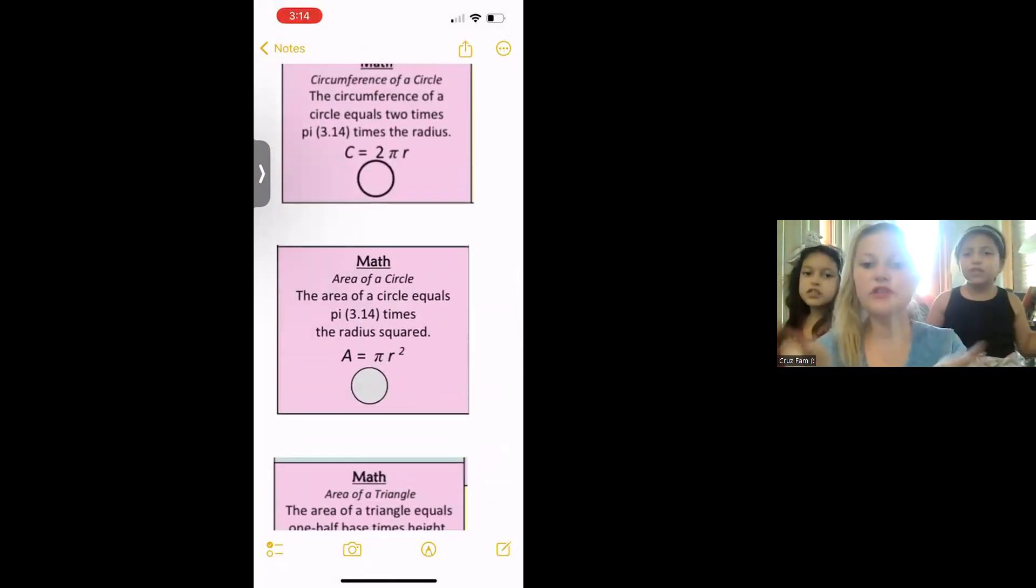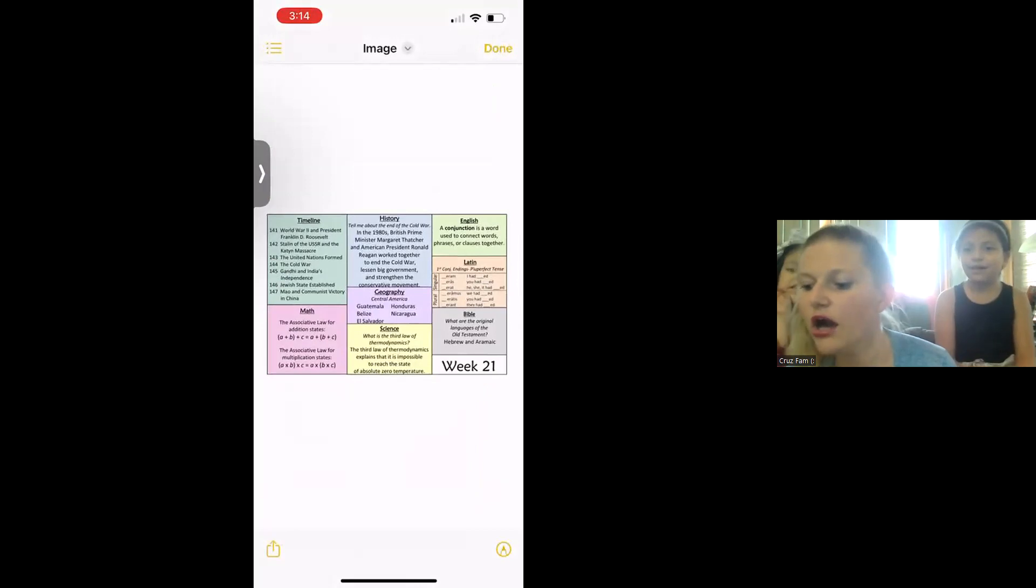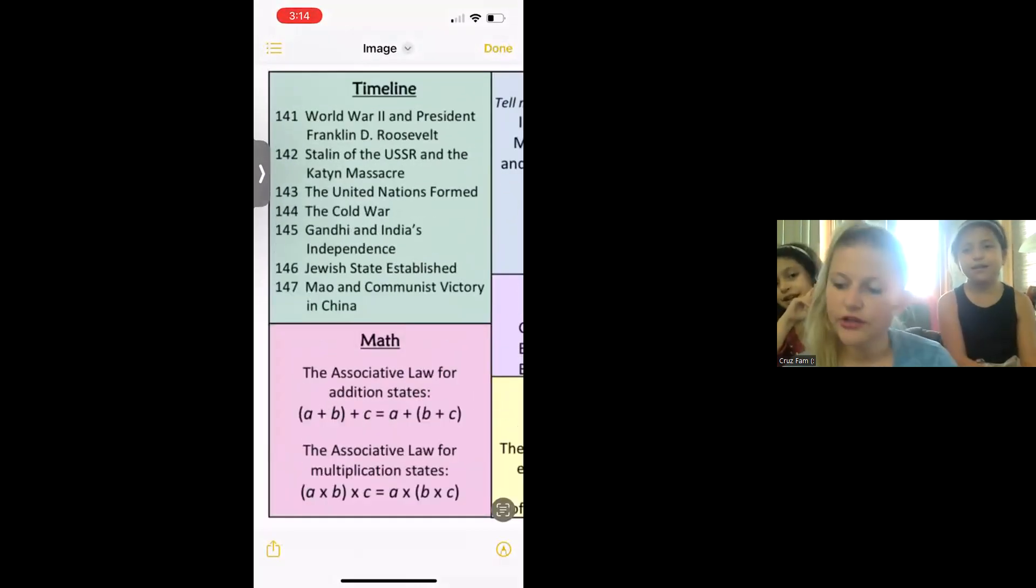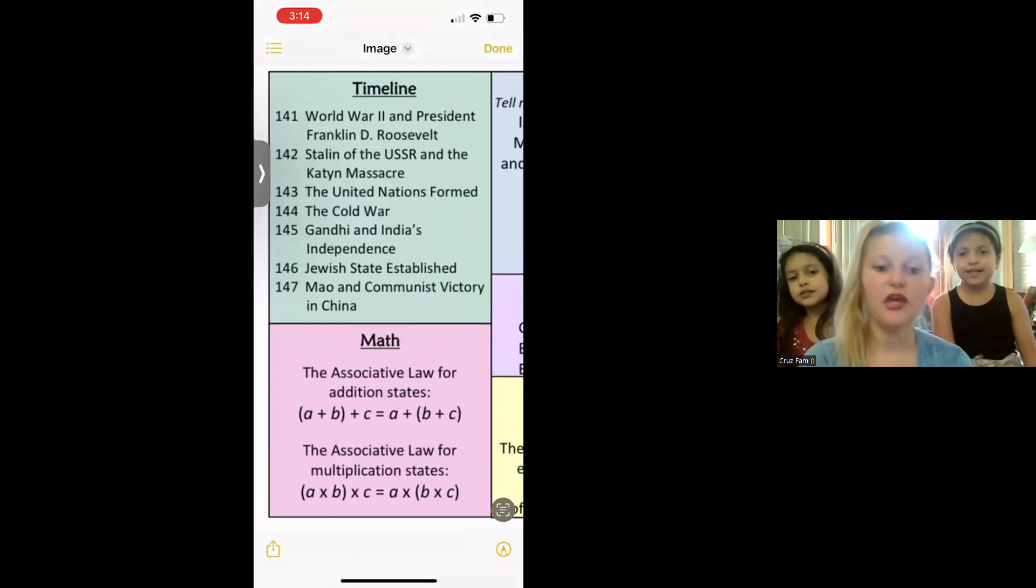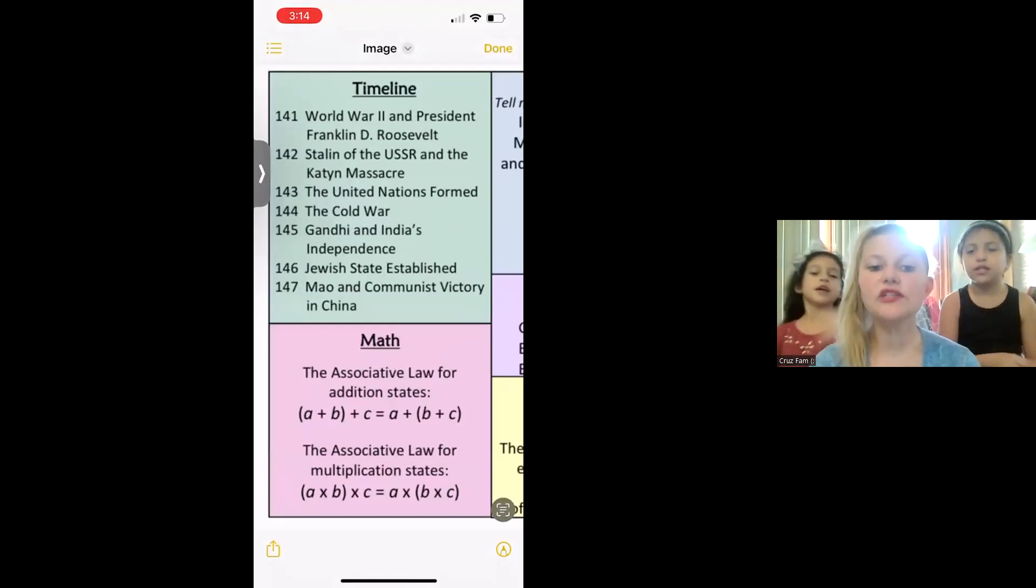Plus geometry, geometry. Let's learn some geometry. And here's the new math. The associative law for addition goes something like this: (a + b) + c = a + (b + c). The associative law for multiplication goes something like this: (a × b) × c = a × (b × c).